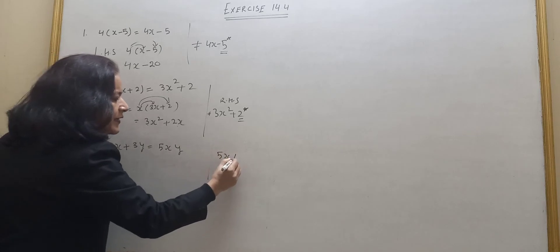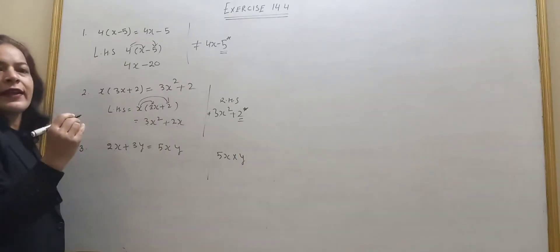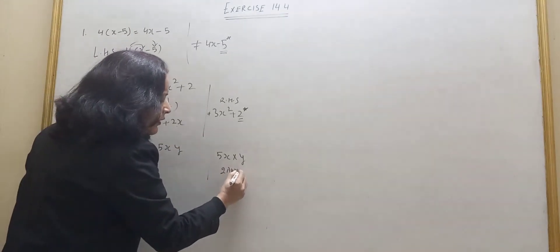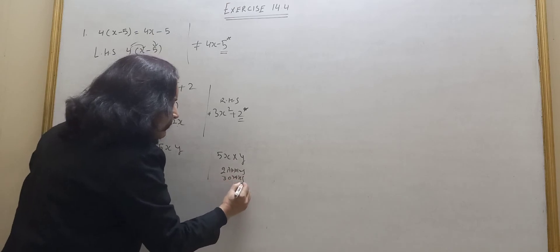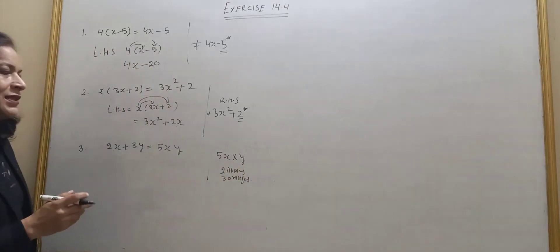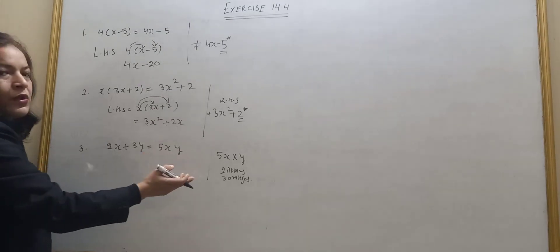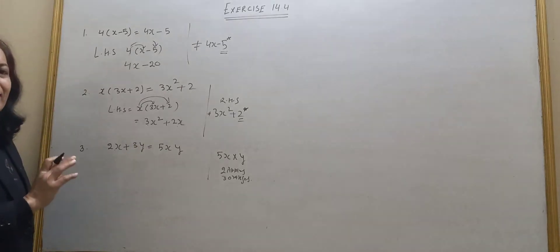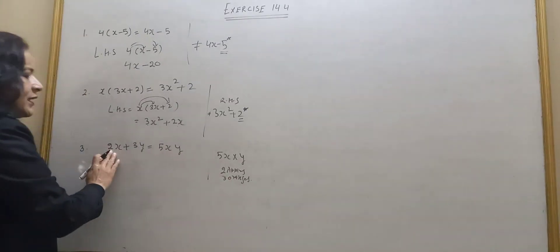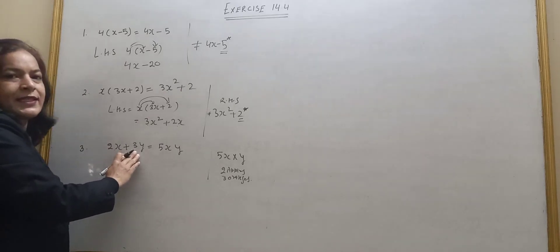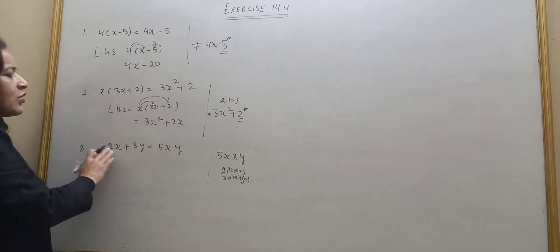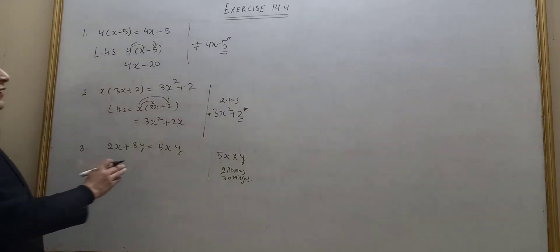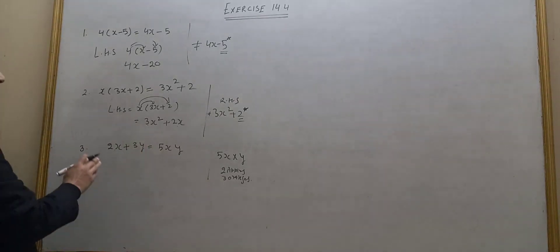When we have 5x into y, that is 5xy. We can add terms like 2x plus 3x. But 2x plus 3y is equal to 2x plus 3y as it is — it is an incorrect statement.